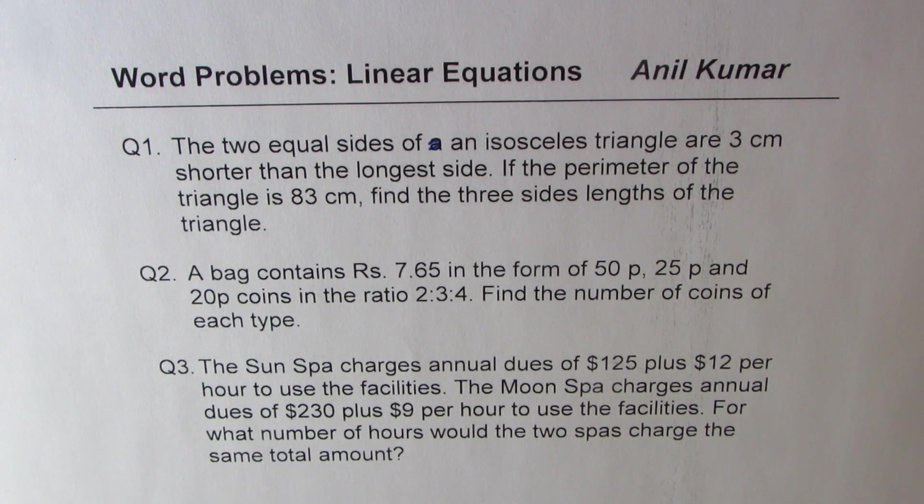Question number one. The two sides of an isosceles triangle are three centimeters shorter than the longest side. If the perimeter of the triangle is 83 centimeters, find the three side lengths of the triangle.